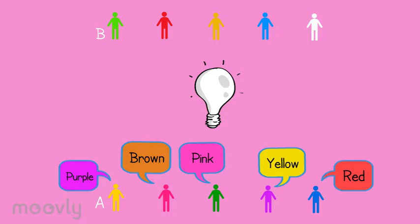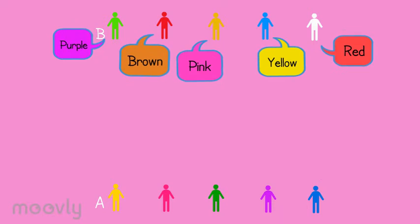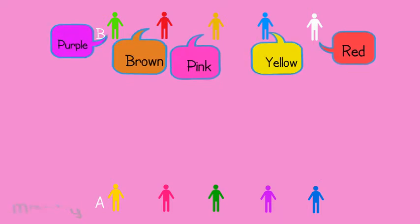For example, by excessive articulation so the listener on the other side can read the lips of the person saying the color. Just as long as they both know they have the same color in mind.